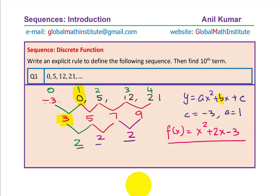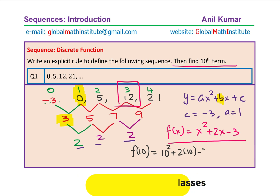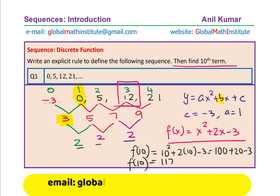You can verify by substituting other known values to confirm the equation works. Now let's find the tenth term — simply substitute x = 10. f(10) = 10² + 2(10) − 3 = 100 + 20 − 3 = 117. So the tenth term is 117. Once you have the explicit rule, finding any term is straightforward.